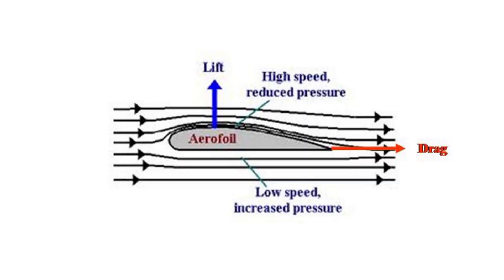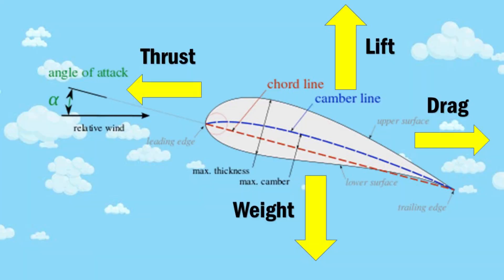Lift is the force that enables flight and pushes the aircraft into the air. Weight is the force that is always opposing lift and always acts on the aircraft, the same as our weight always acts on us. In order to achieve lift, you must have airflow over the wings, and to achieve this, you must have a force known as thrust. But as we accelerate through the air, the air pushes back in the opposite direction of thrust — this is known as drag.